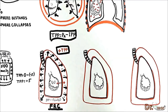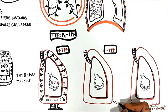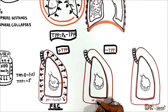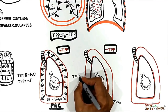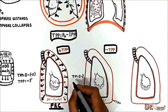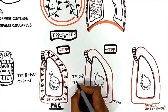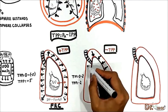Now let's talk about negative transpulmonary pressure. Suppose I inject air into the intrapleural space of the second lung and make the intrapleural pressure positive — let's say to plus 2 cmH₂O. Putting values into the equation: transpulmonary pressure equals zero (alveolar pressure) minus positive 2 (intrapleural pressure), which equals negative 2. If transpulmonary pressure is negative, it is a net force trying to deflate the lung.